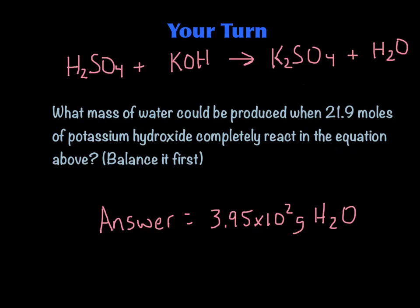Now it's your turn to try it out. I've given you a skeleton equation of an acid-base reaction between sulfuric acid and potassium hydroxide. I've also given you 21.9 moles of KOH — potassium hydroxide — and I want you to find how many grams of water you're going to make. You have to balance this first and then do the proper action line. You should end up with 3.95 times 10 to the second — your calculator may say 394.638, and I've put it in the correct scientific notation and sig figs. Once you get done, do the next problem.